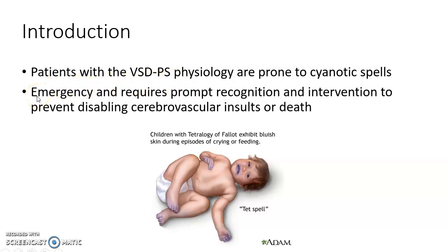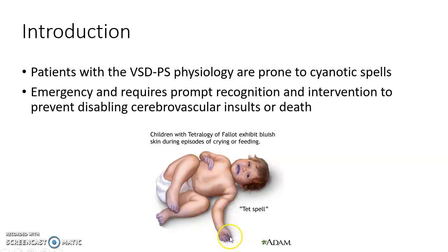Cyanotic spells are an emergency and require prompt recognition and intervention to prevent disabling cerebrovascular events or death. This picture shows a child with tetralogy of Fallot exhibiting bluish skin during episodes of crying or feeding — this is a cyanotic spell, also known as a tet spell. You can notice the bluish discoloration in the baby.